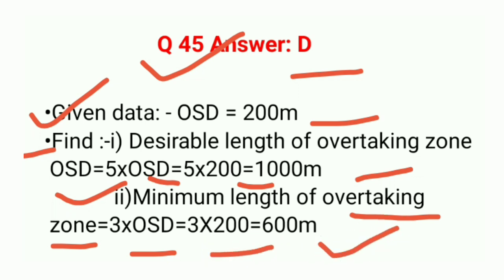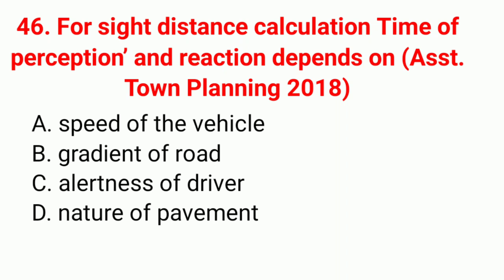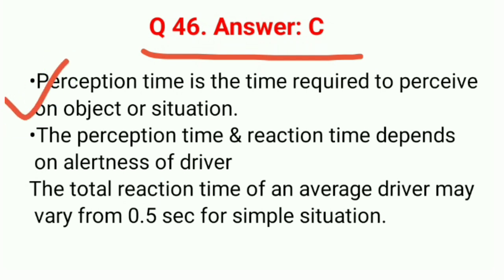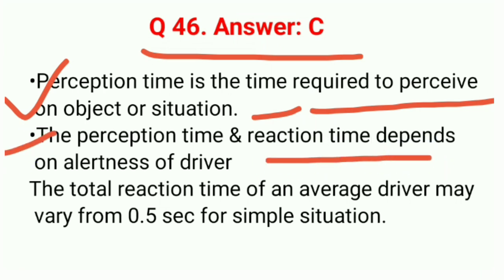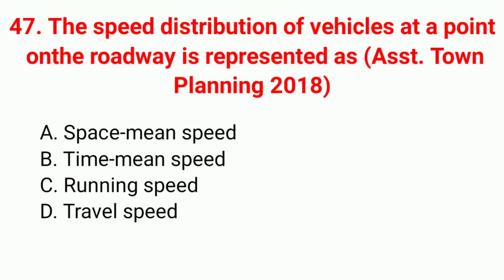Question 46: For sight distance calculation, perception and reaction time depends on — correct answer C: alertness of driver. Perception time is the time required to perceive an object or situation. The perception-reaction time depends on the alertness of the driver. Total reaction time for an average driver may vary from 0.5 seconds for simple situations.